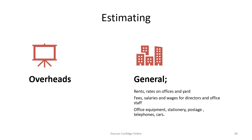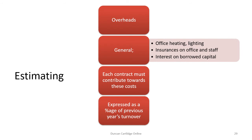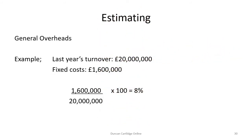On to the cost of resources: overhead costs need to be considered, and these fall into two categories. The first is general overheads, such as rent, rates and head office costs. Each contract must contribute a percentage to overhead or establishment costs, and this is calculated as a percentage of previous year's turnover. Based on a turnover of £20 million a year and fixed costs of £1.6 million, in this case the general overhead percentage is 8%. If these costs are to be recovered, this percentage must be added to the basic cost of resources.